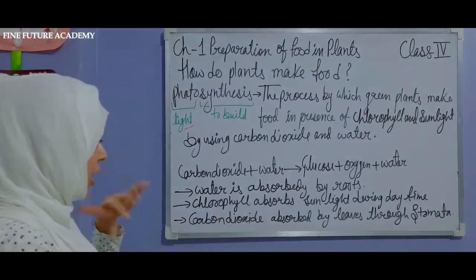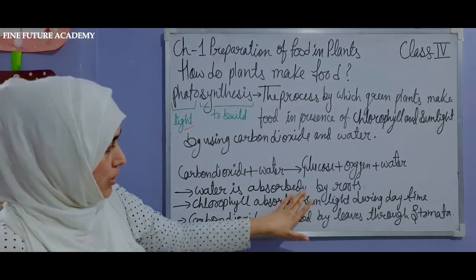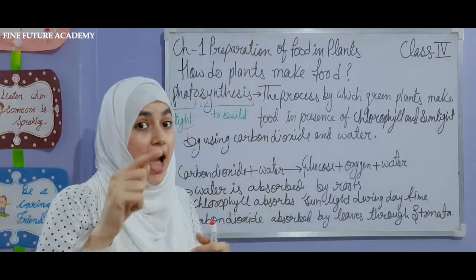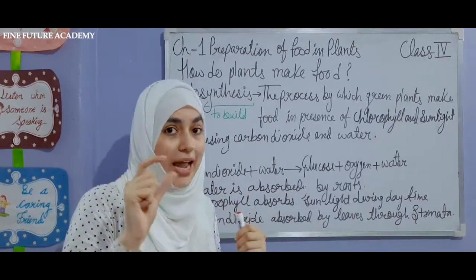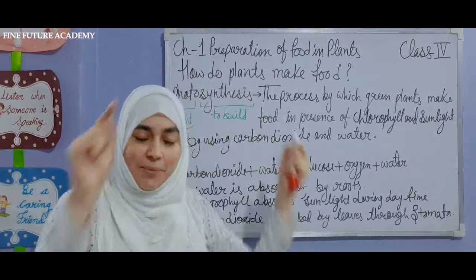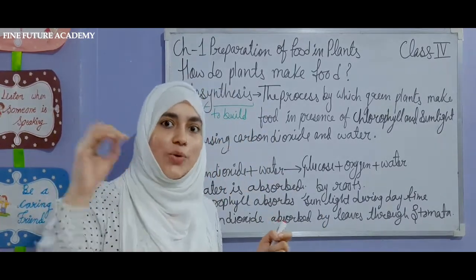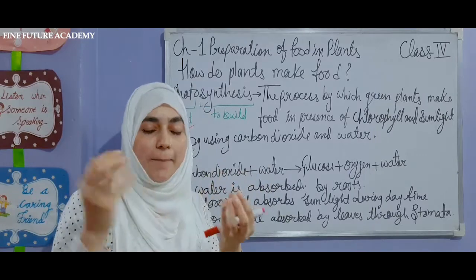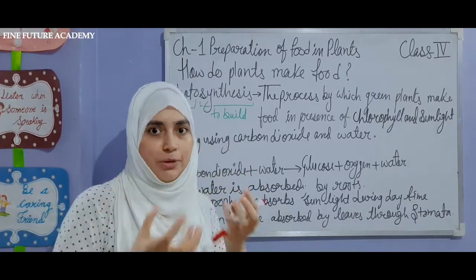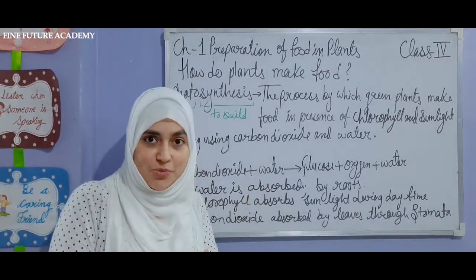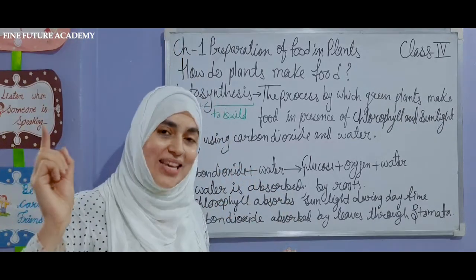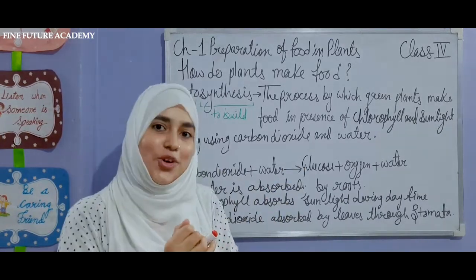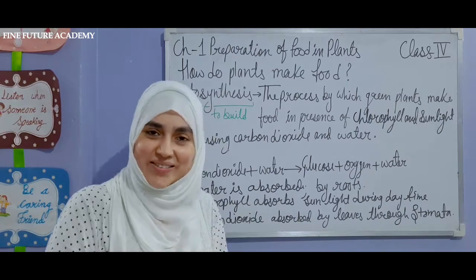Water is absorbed by roots. There are tiny holes in the leaves and throughout the plant, and through these, water is transferred to other parts. When we water a plant at the roots, that water is transported up to the leaves because leaves need water to make food — just like we carry ingredients to the kitchen.